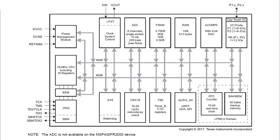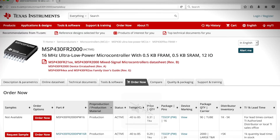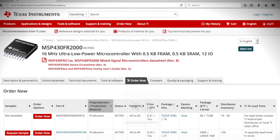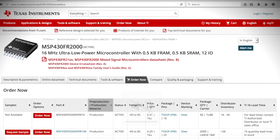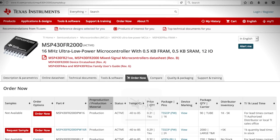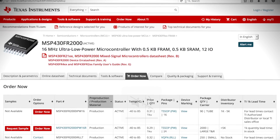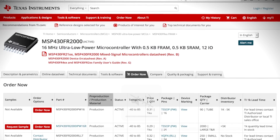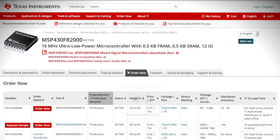With devices offering half a kilobyte to four kilobytes of embedded FRAM non-volatile memory, as well as peripheral options including a 10-bit ADC, enhanced comparator, UART/OS spy communication, and real-time counter — with 1,000-unit suggested resale prices as low as 29 cents and under 25 cents in higher volumes — they enable a programmable alternative to many of today's fixed-function ICs.